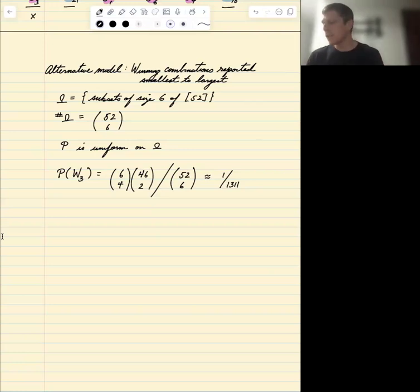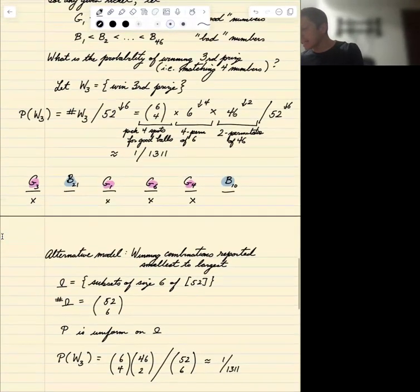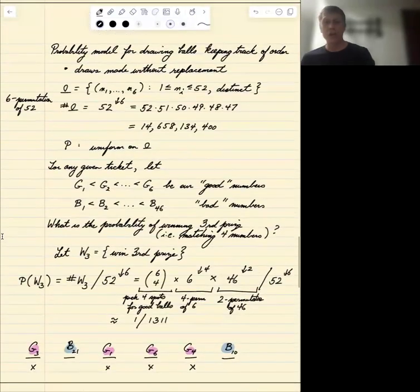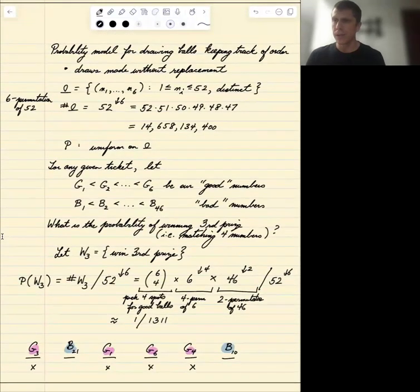And this also is the same number, approximately one over 1311. Same answer, two different approaches to getting them. That's the beauty of counting. If we know how to count, we can do it either way. So this example actually gives us a starting point for what's called the hypergeometric distribution. That's what I'm going to talk about in the next section, and we'll revisit this example in the context of that distribution.